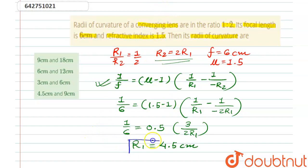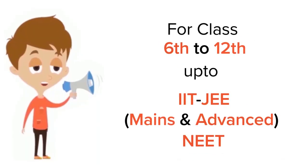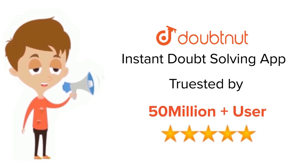So r1 is 4.5 centimeters. Then r2 = 2 × r1 = 2 × 4.5, so r2 is 9 centimeters. Our answer is option D.